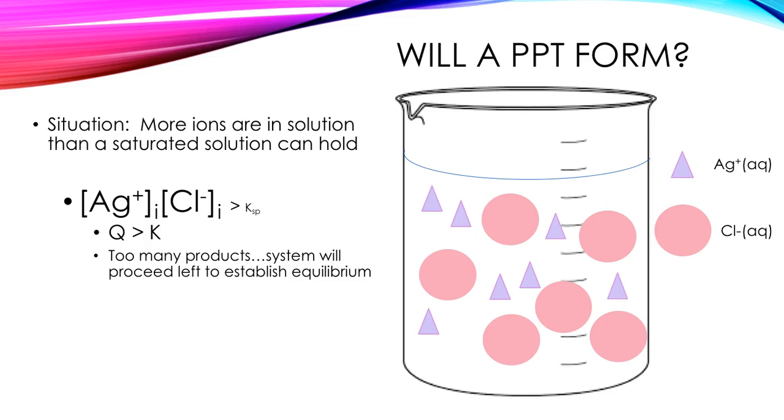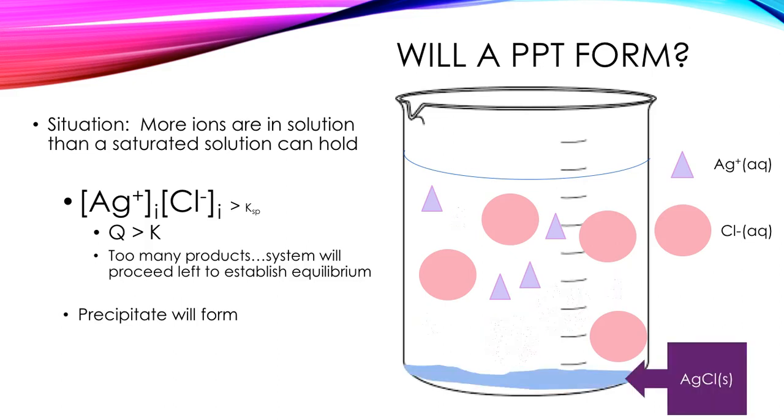What are the reactants? Solid silver chloride. So if Q is too big, if my product of ion concentrations is too large a value, I'm going to make a precipitate until the concentrations equal what I would have at equilibrium.